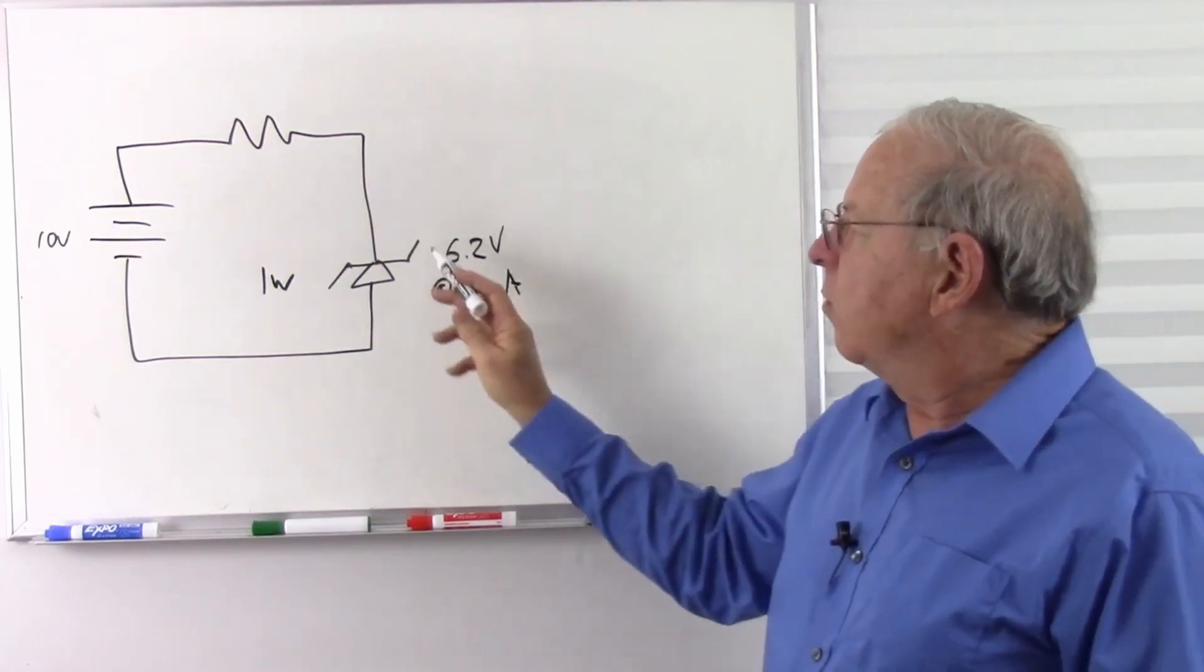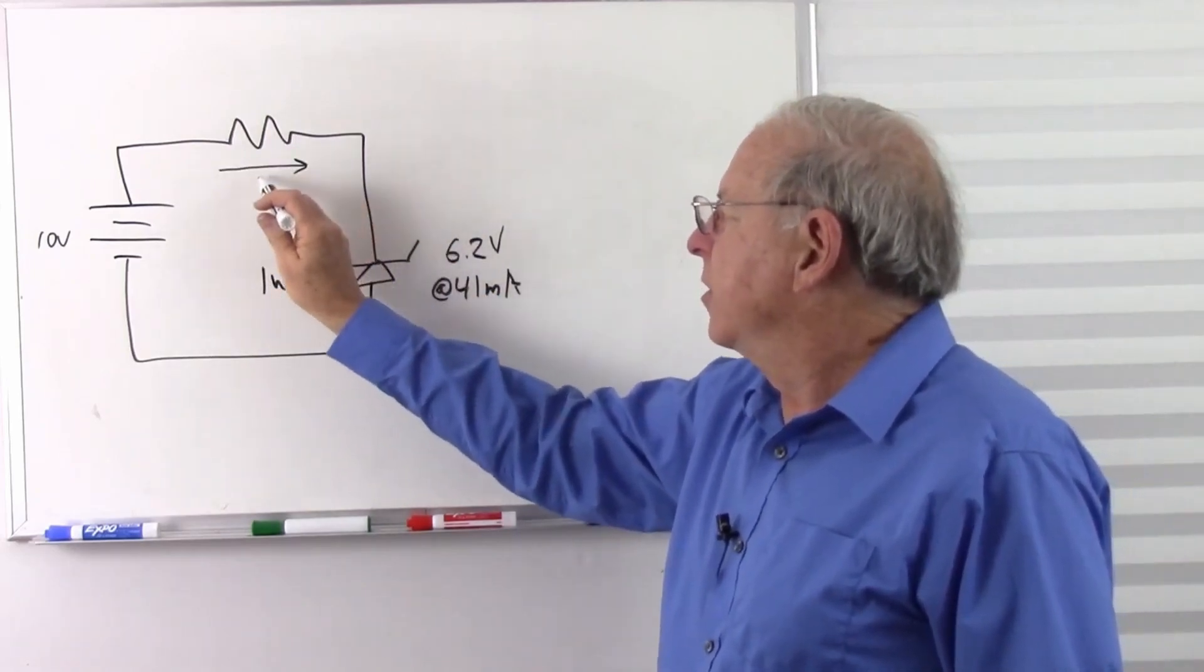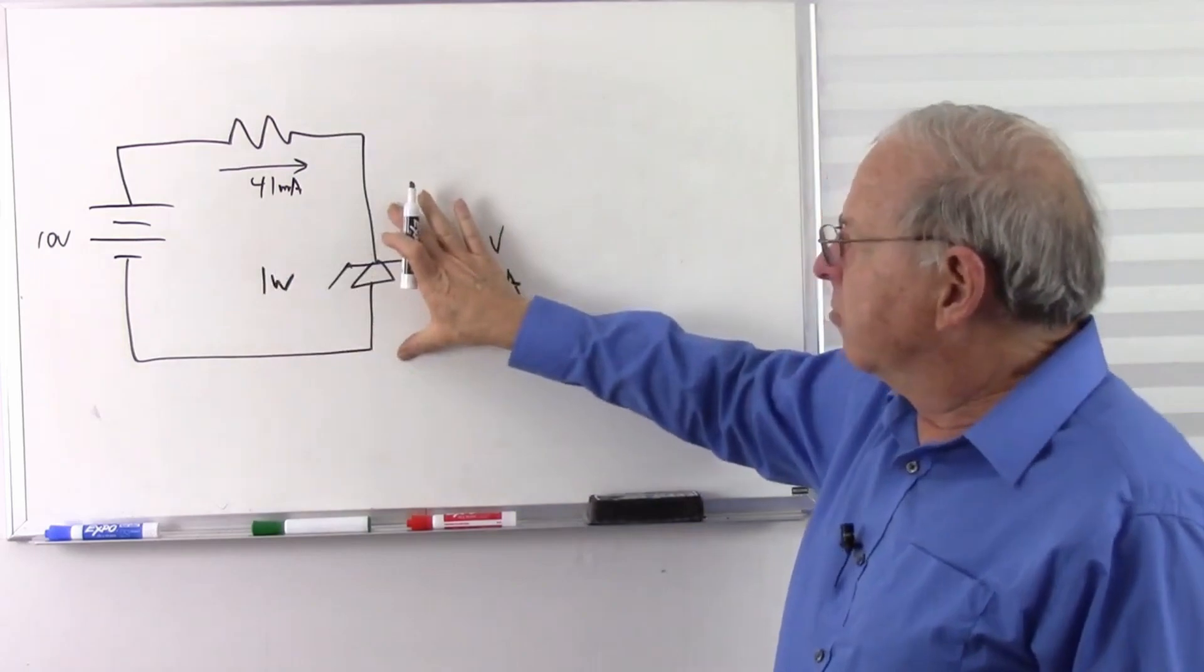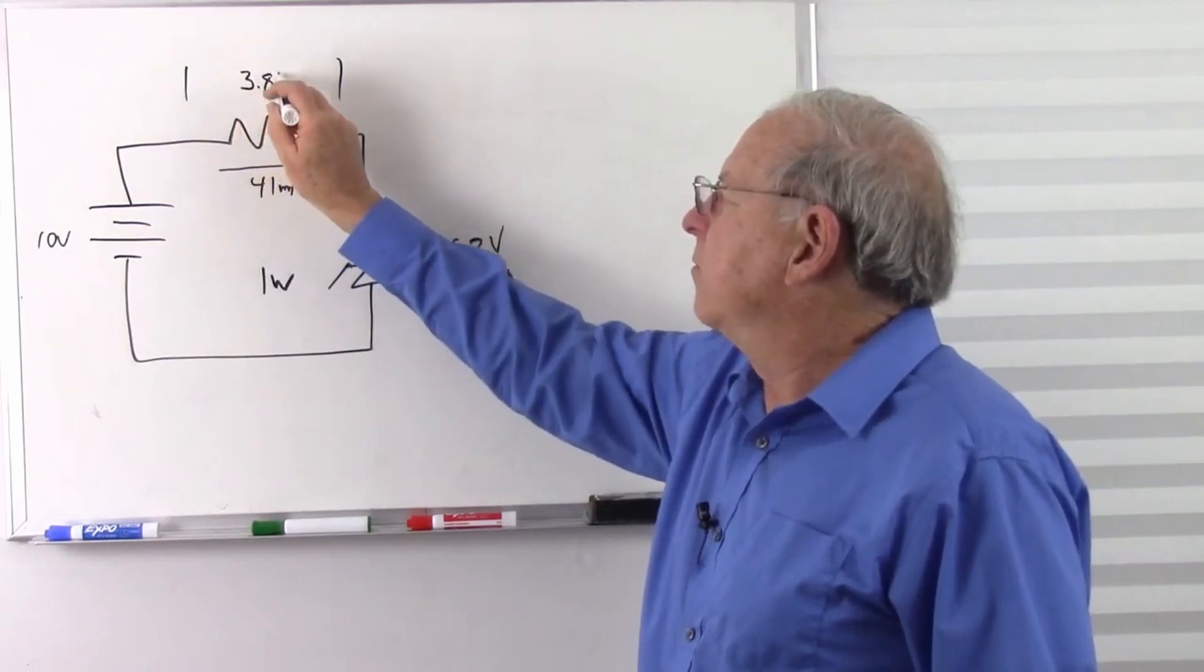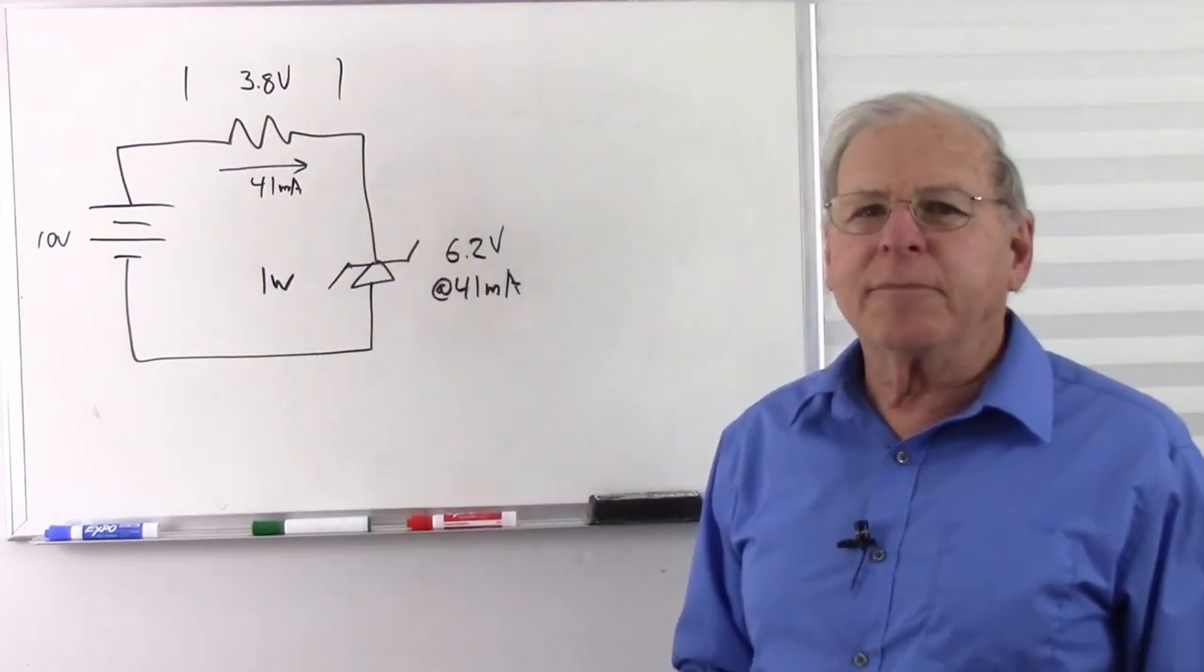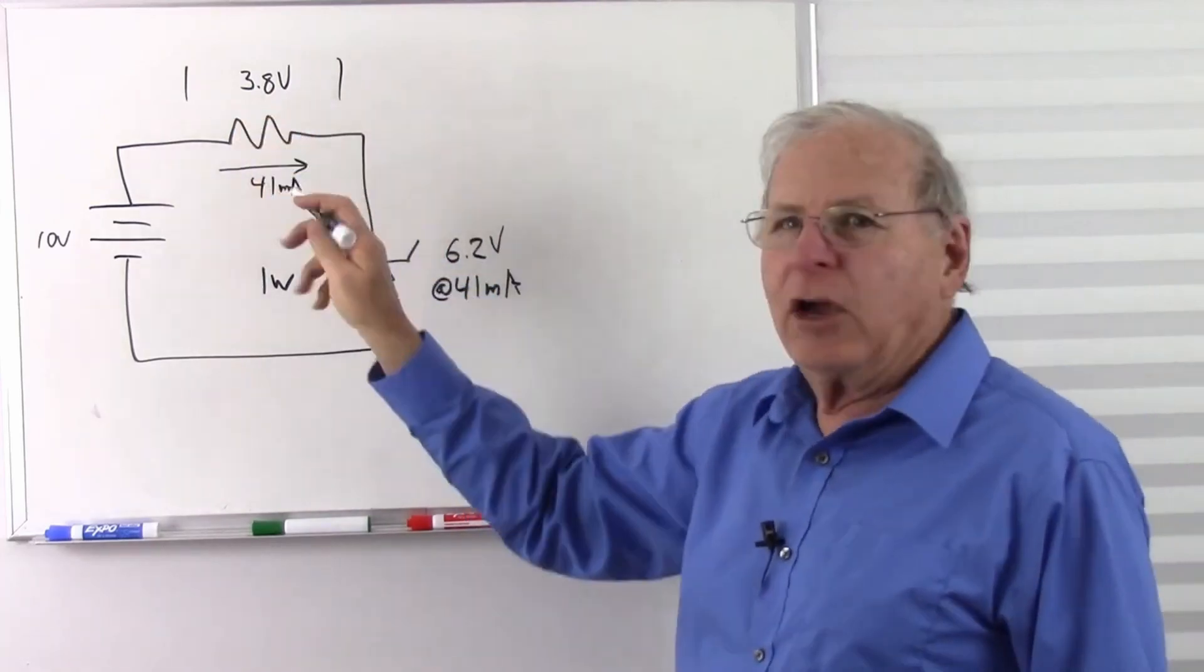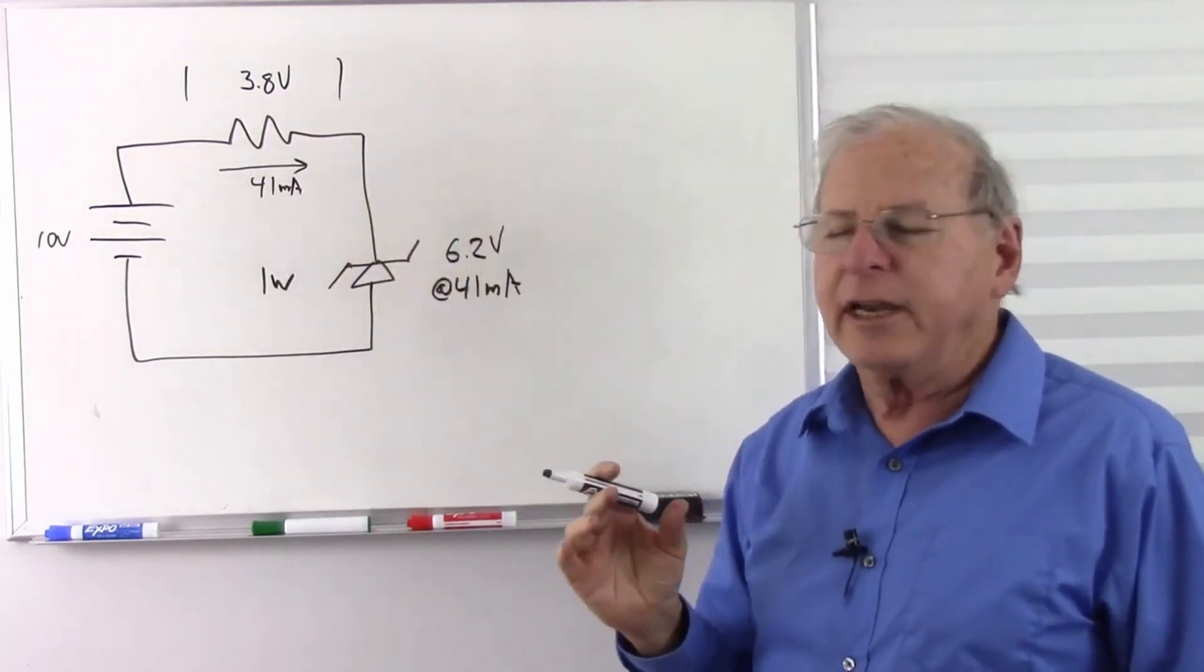If I want to decide what resistor I need here, I use that test current, which is going to be 41 milliamps, and the voltage that will be across this resistor. This is a series circuit, so whatever voltage is not here is going to be over here. This is going to be 3.8 volts. If I take my 3.8 volts and divide it by 41 milliamps, that gives me a resistance of 90.2 ohms, roughly 90 ohms. I'll choose a resistor as close to 90 ohms as I can get.